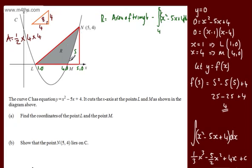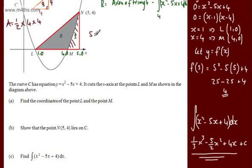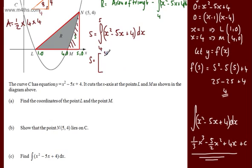So R is going to be 8 minus the area trapped under the curve, which I'll call S. S equals the integral from 4 to 5 of x squared minus 5x plus 4 with respect to x. Using our result from part C, we evaluate one third x cubed minus 5 over 2 x squared plus 4x from 4 to 5.